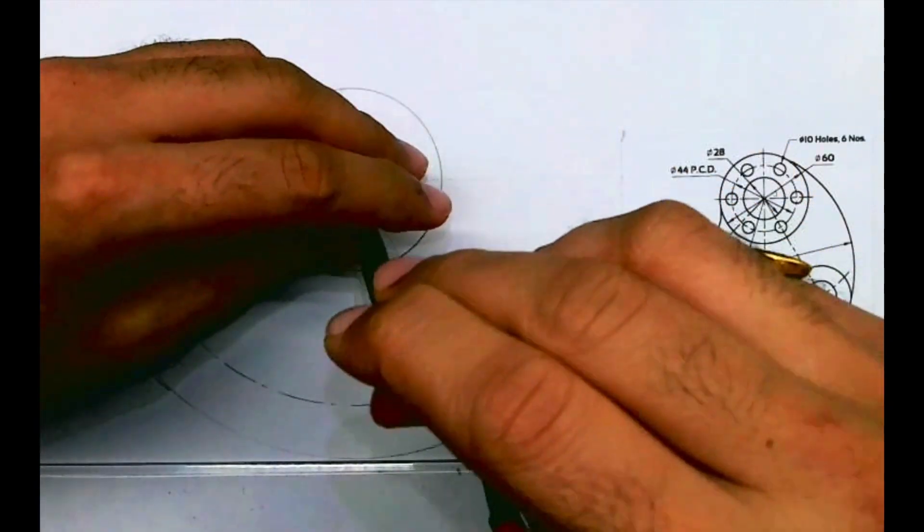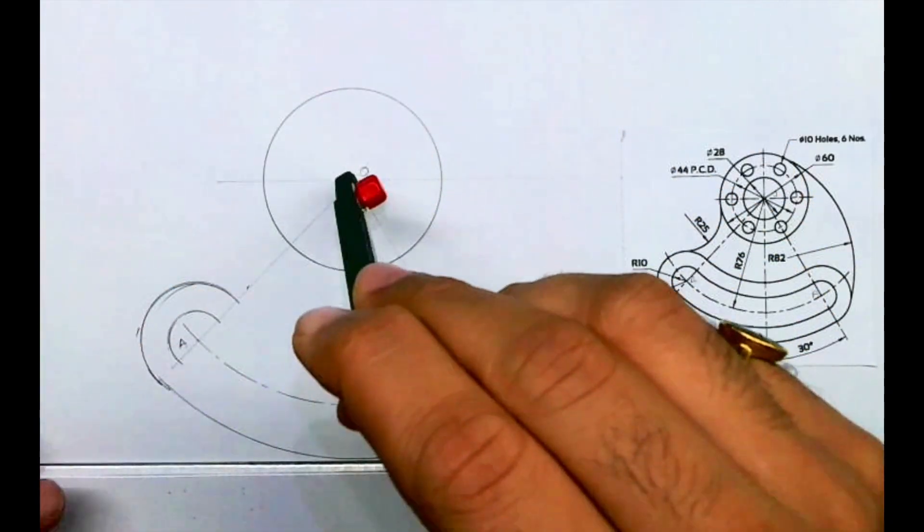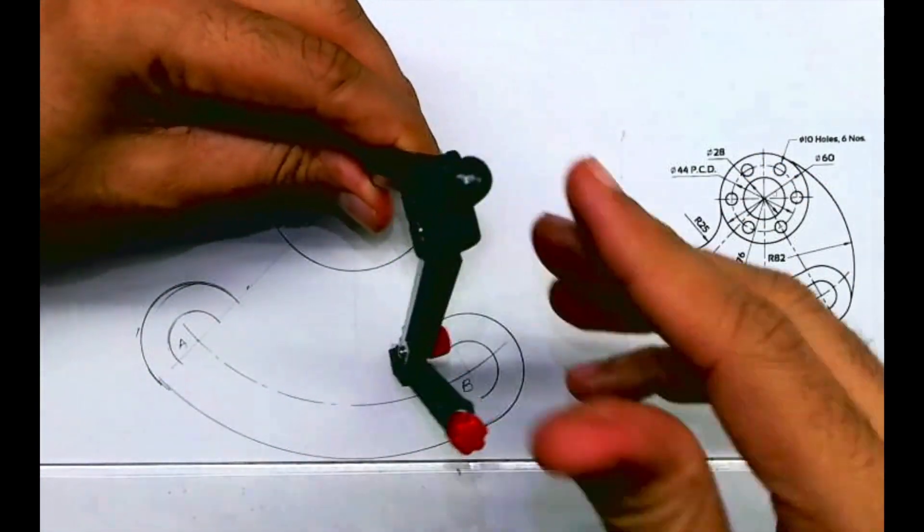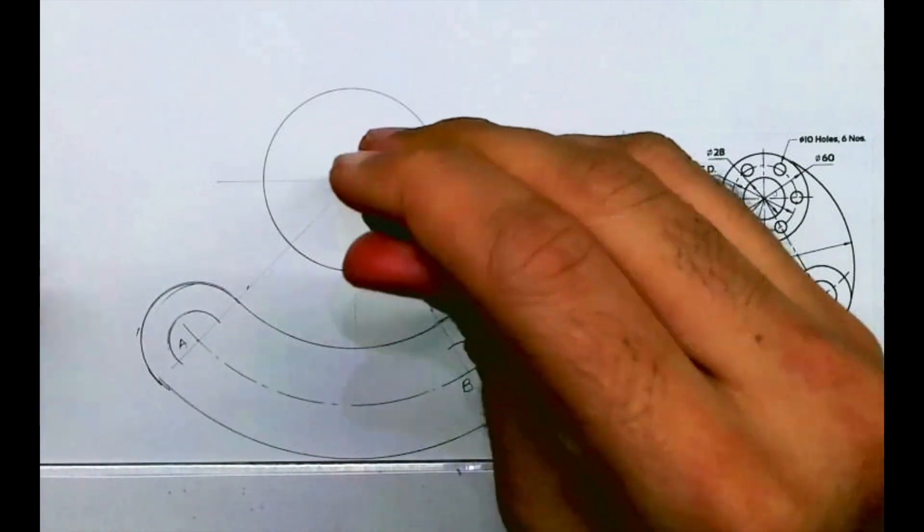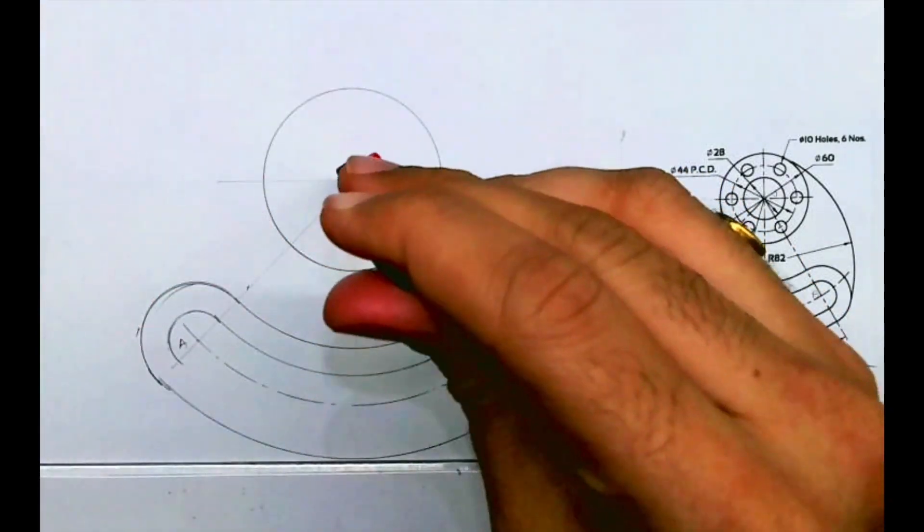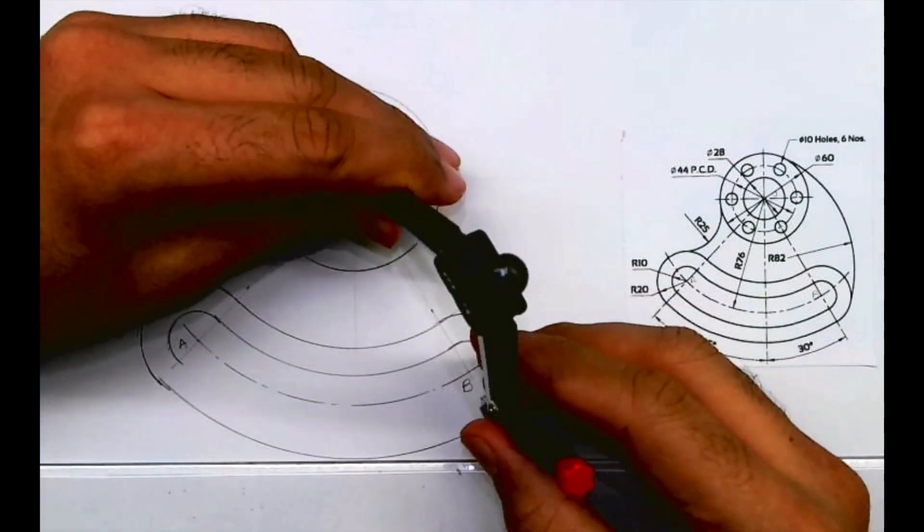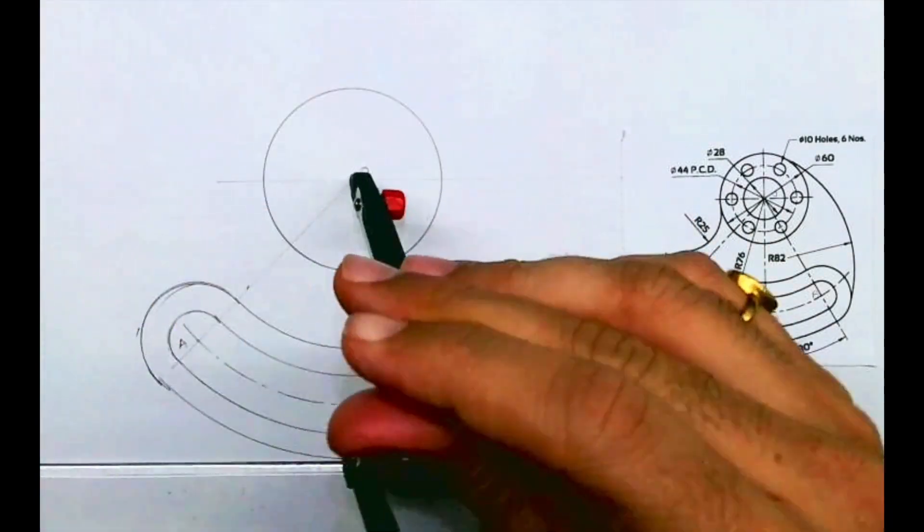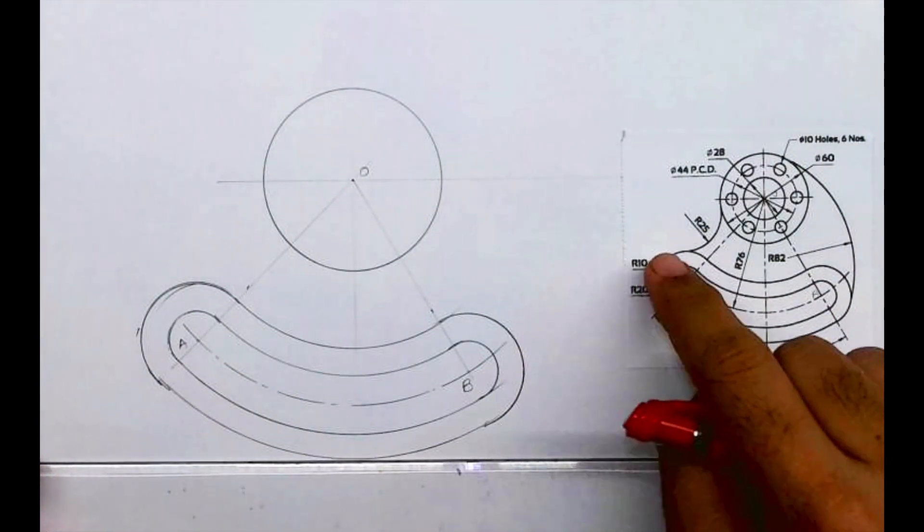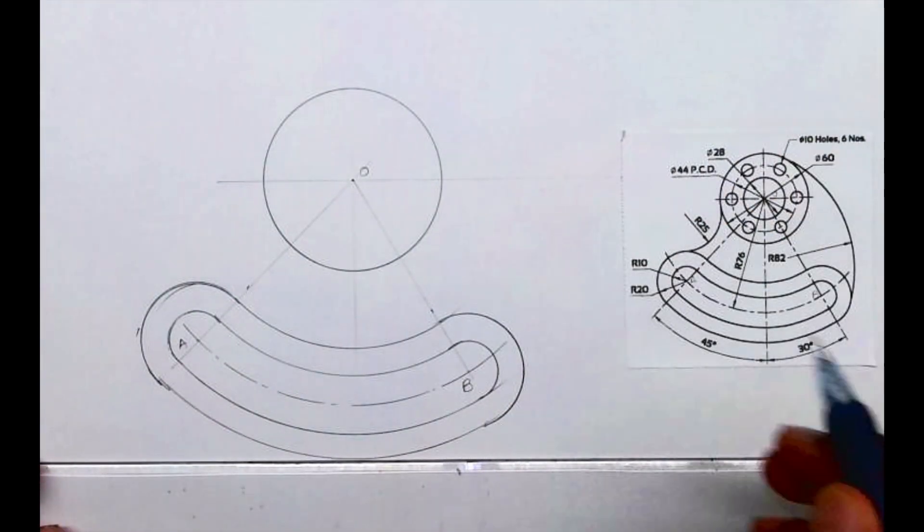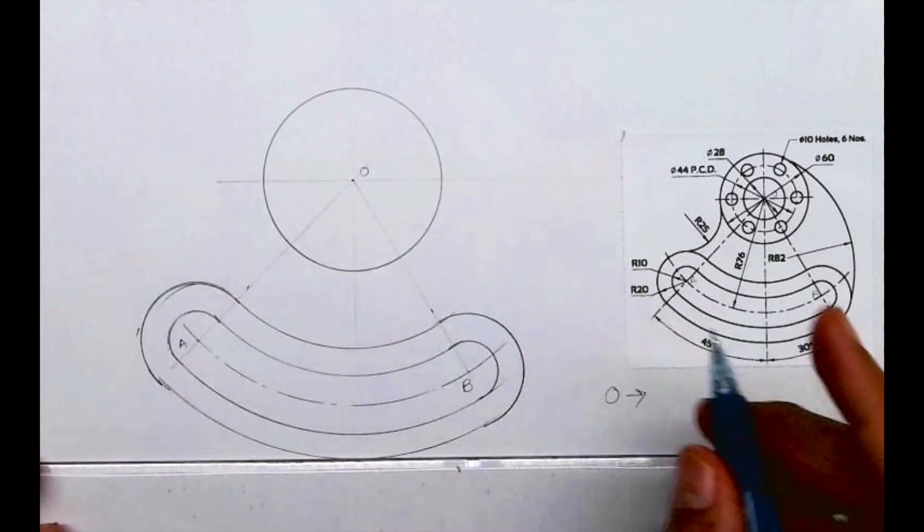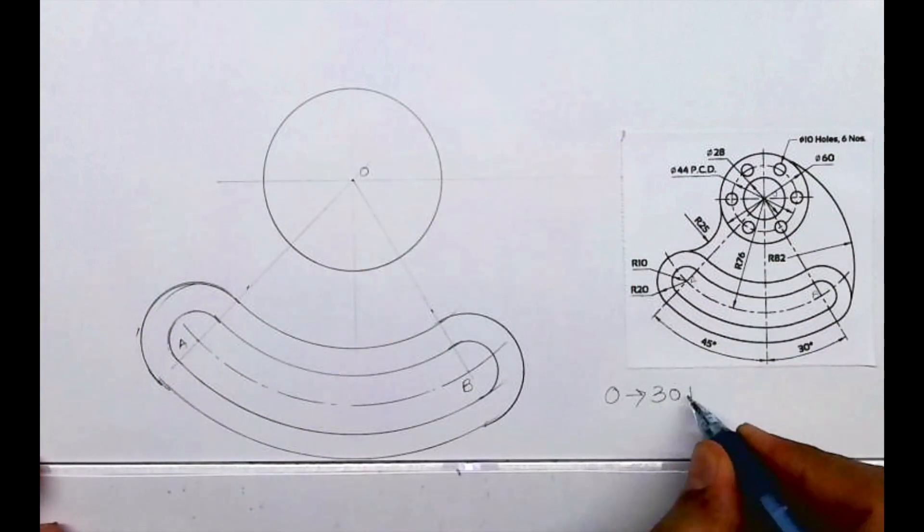So from O we can join this curve. So from O we can join this curve radius 25. So if you see, radius 25 is external, so from O we will cut 30 plus 25.